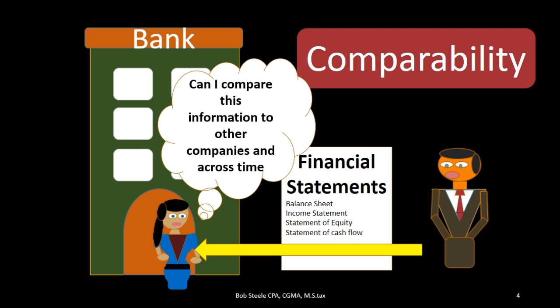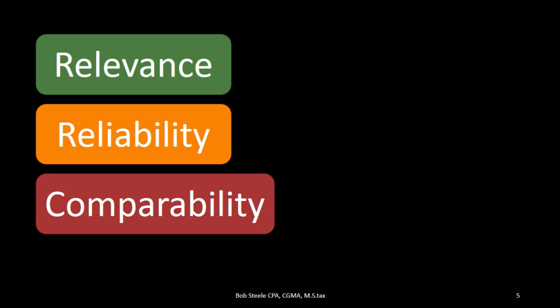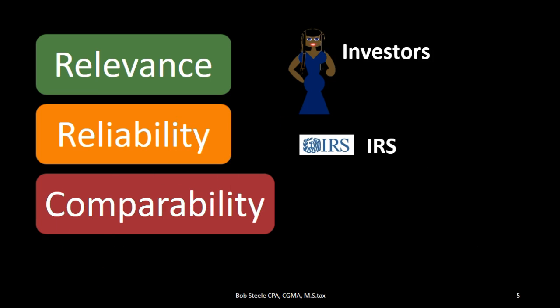That's why the financial statements are really geared towards external users. That's why there are usually more rules for the financial statements, and they are a bit more strict than would be necessary for internal use — for management who would have more knowledge about the company they are running. External users are more dependent on the financial statements. So we've taken a look at our objectives — relevance, reliability, and comparability — in terms of our external user being the banker. We can also think of these same objectives in terms of other external users, including investors, as well as the IRS in terms of taxes.